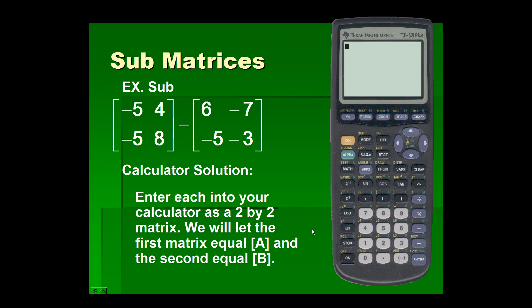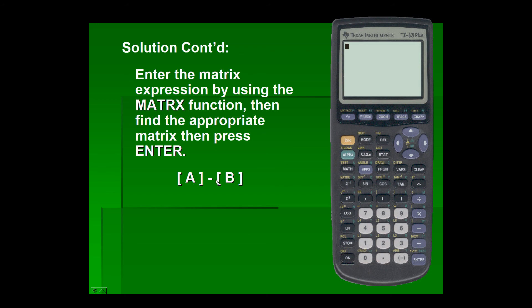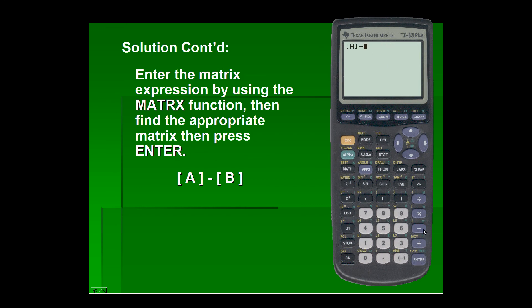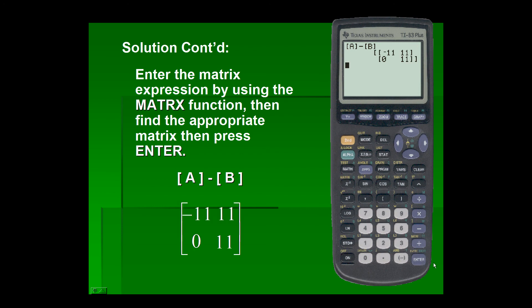Let's take a look at the calculator solution. We'll enter matrix A minus matrix B — we already have both matrices stored. So I'll enter the matrix function, select matrix A minus, go back into the matrix menu, and select matrix B for our resulting matrix.